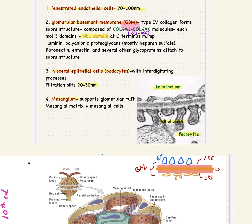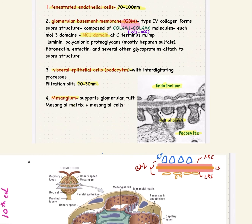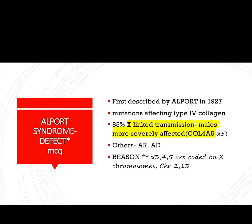We should recall from previous lectures that the glomerular filtration barrier has different parts: the fenestrated endothelial cell layer, the visceral epithelial layer, and the glomerular basement membrane, which is a very important part of the filtration barrier. The glomerular basement membrane is made up of type 4 collagen. There are genes COL4A1 to COL4A6 encoding for alpha 1 to alpha 6 chains, which form an important part of the glomerular basement membrane along with proteoglycans.